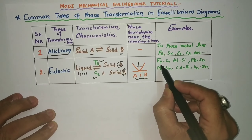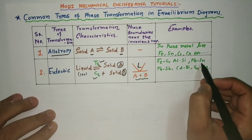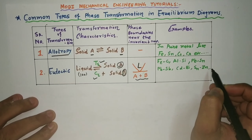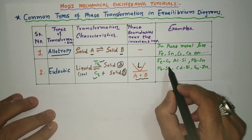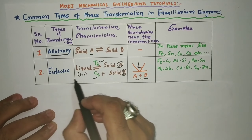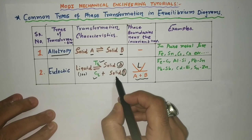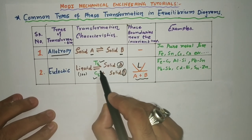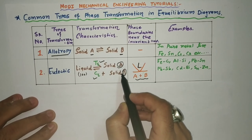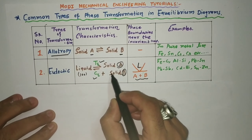Examples of eutectic transformation include the iron-carbon (Fe-C) diagram, aluminium-silicon, lead-tin (Pb-Sn), Pb-Sb, cadmium-bismuth, Sn-Zn, and many more binary metal alloys. At the eutectic point, 100% liquid solidifies into two different solids — a constant temperature solidification process. Solid A and B are insoluble in each other, which is why two different solids form.